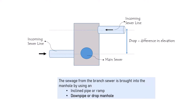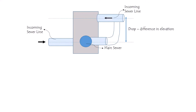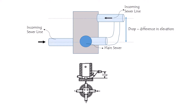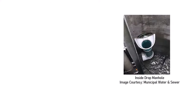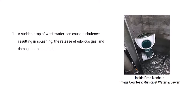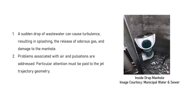If you do not provide a branch sewer like a drop manhole, there will be a sudden drop of wastewater that causes turbulence, resulting in splashing, release of odorous gas, and damage to the whole manhole unit. There are also problems associated with air pulsations within the manhole system. Hence, we need to provide a drop manhole system for proper working of the whole manhole unit as well as for maintenance services.